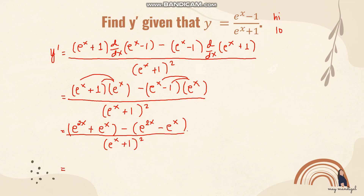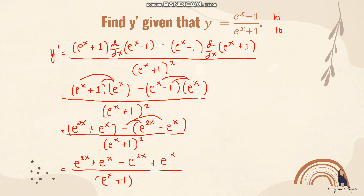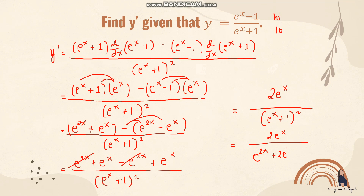Distributing the negative sign in the numerator gives us e raised to 2x plus e raised to x, minus e raised to 2x plus e raised to x, all over e raised to x plus 1 squared. The e raised to 2x terms cancel, and we are left with 2 times e raised to x in the numerator. So the derivative is 2 times e raised to x all over e raised to x plus 1 squared, which expands to e raised to 2x plus 2 times e raised to x plus 1.